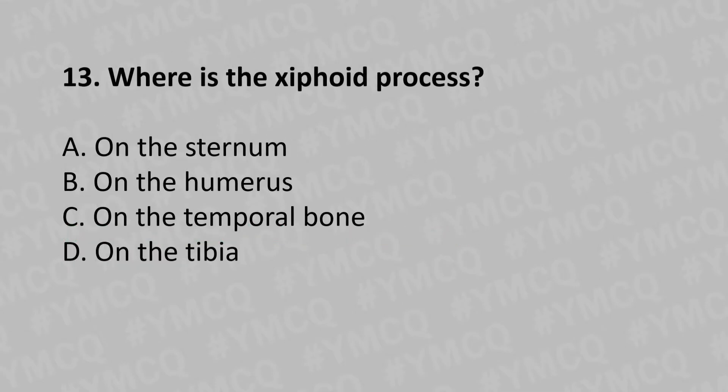Moving to our 13th question: Where is the xiphoid process? Option A: on the sternum, Option B: on the humerus, Option C: on the temporal bone, Option D: on the tibia. The answer is Option A: on the sternum.